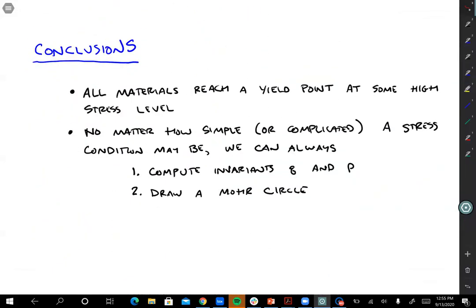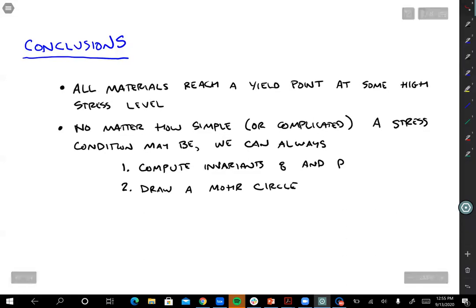Let's talk about some conclusions from this. First of all, all materials reach a yield point at some high stress level, and in particular some high deviatoric stress invariant value. There's no such thing as a material that will never yield. You can always break it, no matter how strong it is, as long as you impose a big enough stress invariant on it. And then no matter how simple or how complicated a stress condition may be, we can always compute invariants Q and P, and we can always draw a Mohr circle. So keep that in mind. It turns out that we tend to use very simple laboratory tests to measure strength, but loading conditions that happen in real life might be much more complicated. And so it becomes really important to relate the laboratory strength to the field loading condition. And you have to do it in a way that follows tensor-based stress concepts.